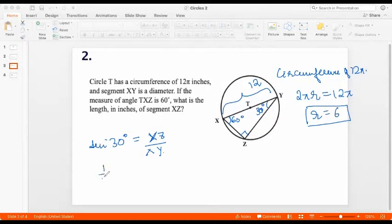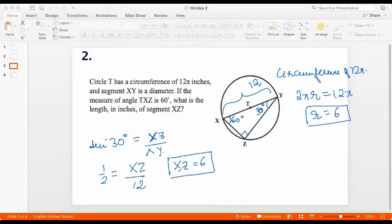And the value of sine 30 is half is equal to XZ divided by, now we know XY is 12. So XZ will be 6. So the length of XZ is 6.